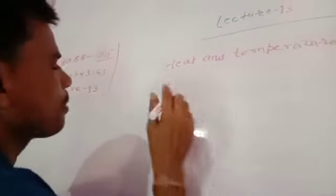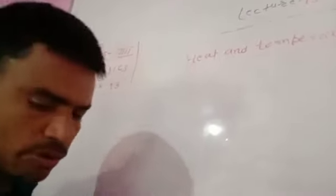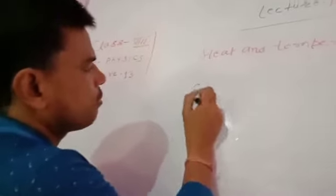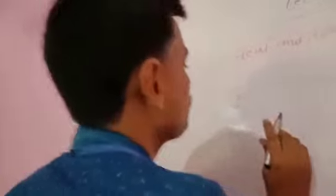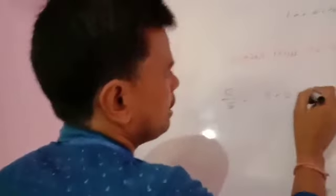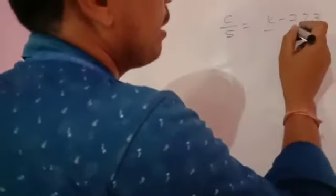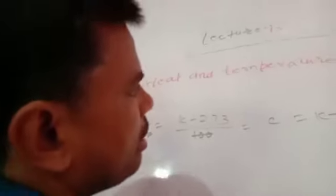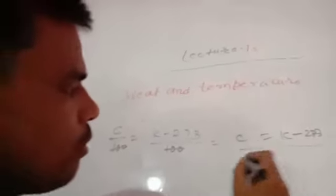In the previous lecture, I told you that the relationship is related to Celsius and Kelvin. In Kelvin, our relation is: what is C by 100? K minus 273 — clear? The Kelvin value is C plus 273. This was all from the previous lecture.